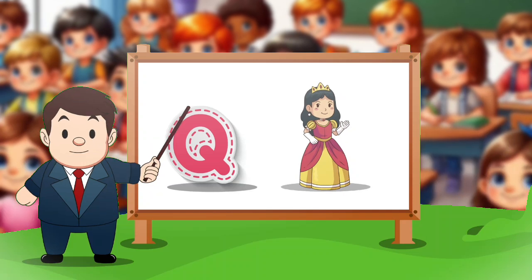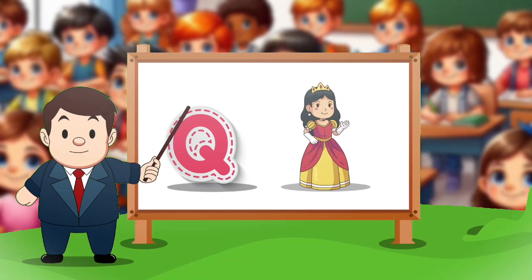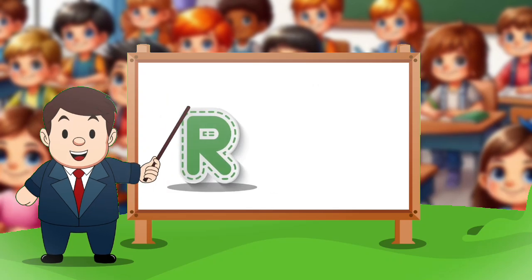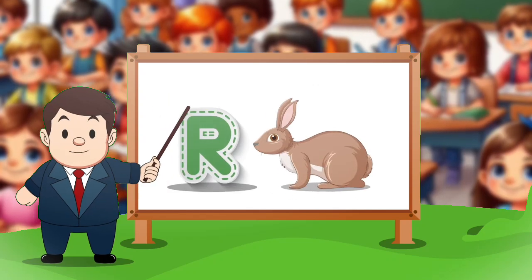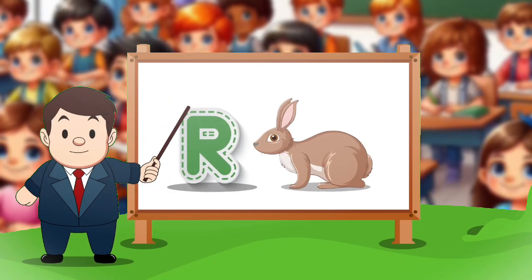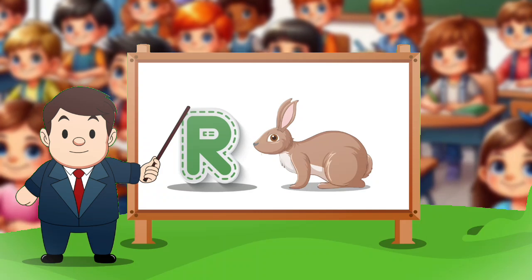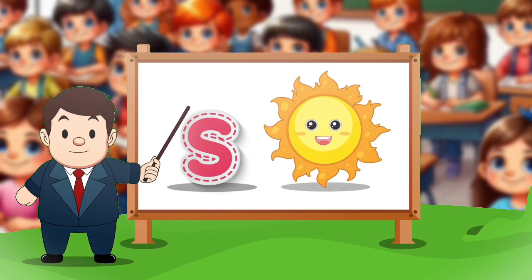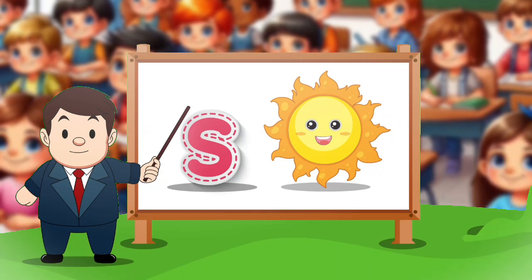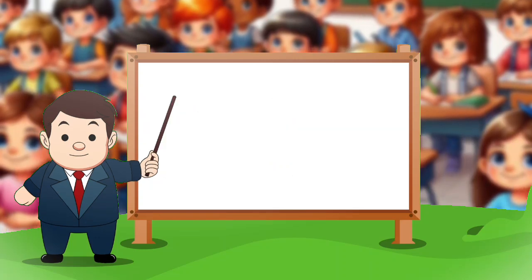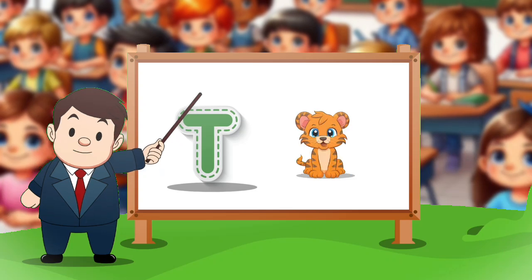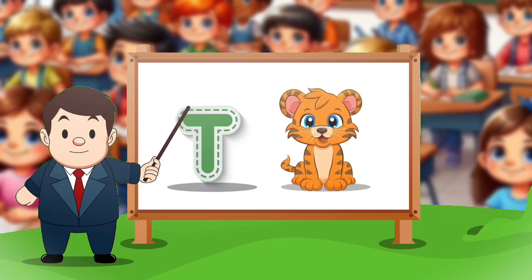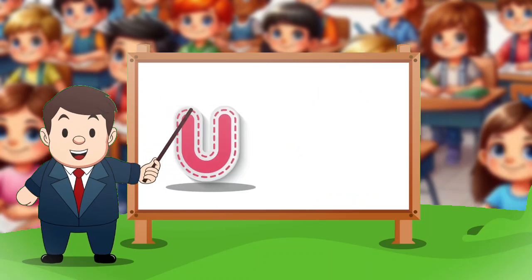Q. Q for queen. R. R for rabbit. S. S for sun. T. T for tiger.